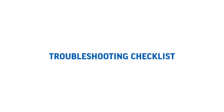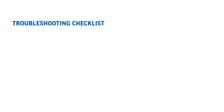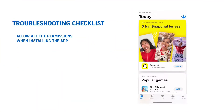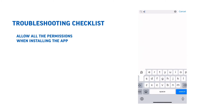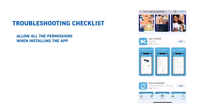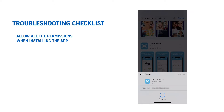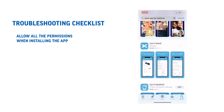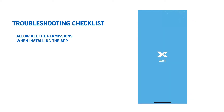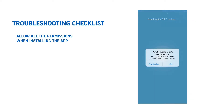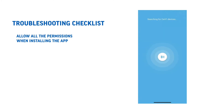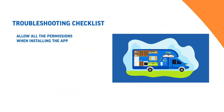Here's the list of things we normally advise customers to check. First, allow all the permissions when installing the app. Go into the app store, download the app, and when installing it will ask you a couple of permissions — just allow them all and that should be good.